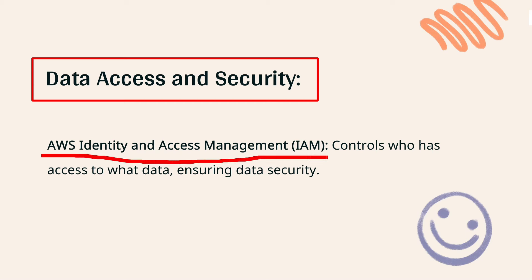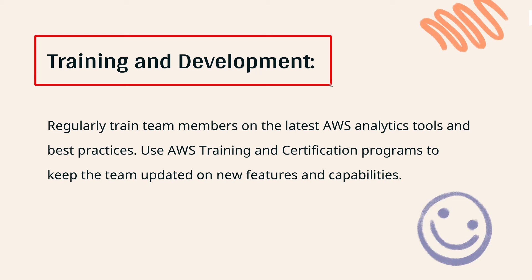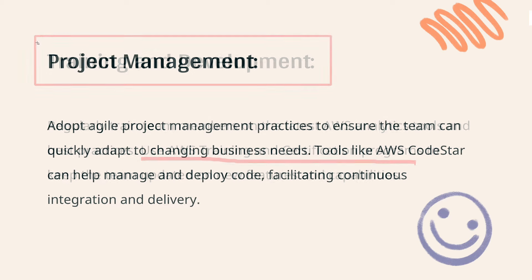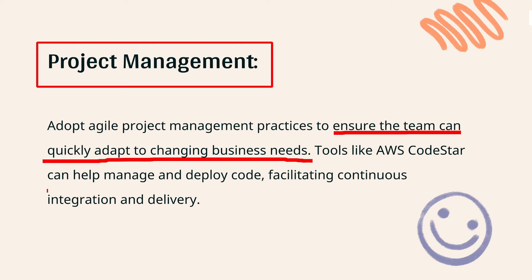Use AWS Identity and Access Management to control who can access which data, ensuring data security. Regularly train your team on the latest AWS tools and best practices, and use AWS Training and Certification programs to stay updated on new features. Adopt agile methods to allow your team to quickly adapt to changes, and use AWS CodeStar for efficient code management and deployment, supporting continuous integration and delivery.